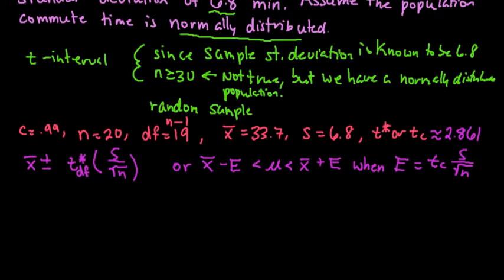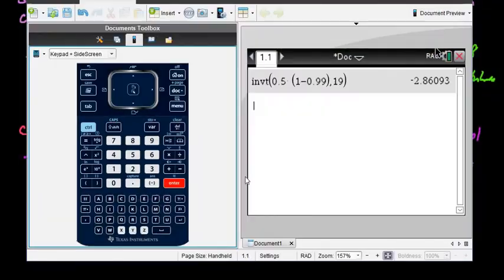So we have enough information to plug it in. Our x-bar is 33.7, plus or minus 2.861, S is 6.8, and 20 is our sample size. So this is basically just showing out the work. The plus or minus can also be written like this one, so it's just a matter of—this one to me is more time-consuming, so I write that. And then I'm going to use the graphing calculator to actually get the answer.